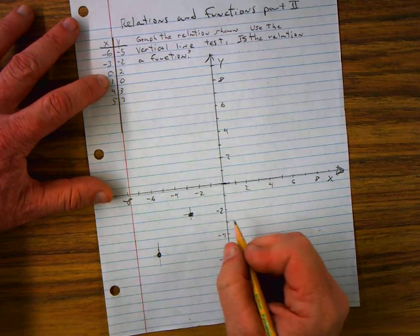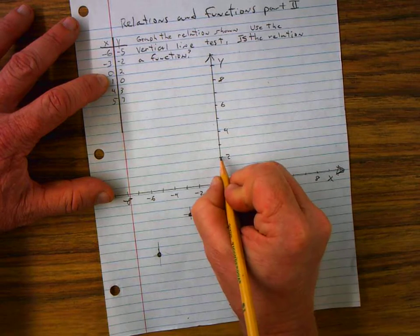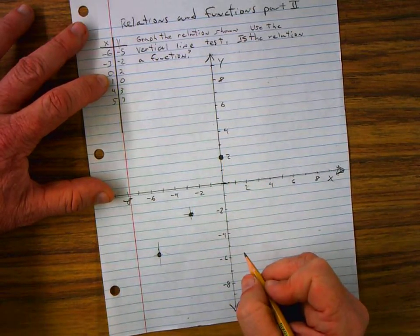My third ordered pair is 0, 2. So 0, X. I stay right at the origin. And then I go up 2. That's my 0, 2 ordered pair.